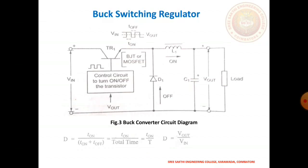Next topic: switching regulators. First one is the buck mode switched regulator. The buck switching regulator is one type of switched mode power supply. It reduces the voltage at the output terminal without changing the polarity. In other words, the buck switching regulator is a step-down switching regulator. This is the basic definition of a buck switching converter.